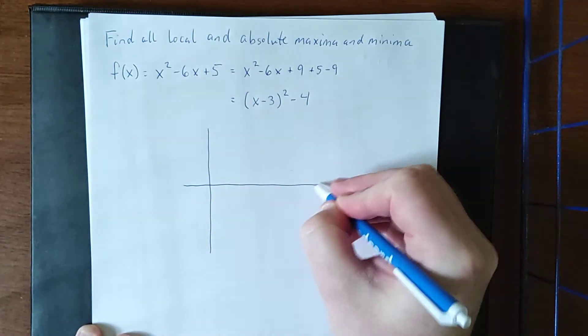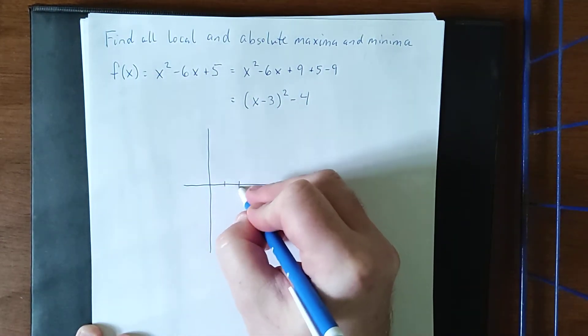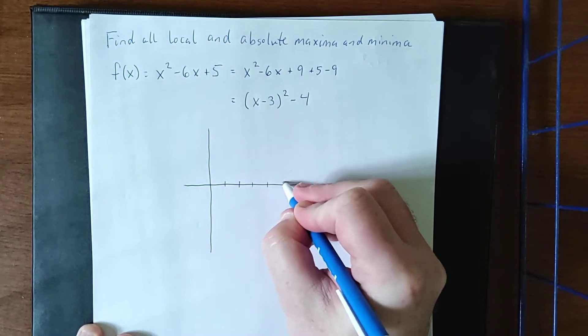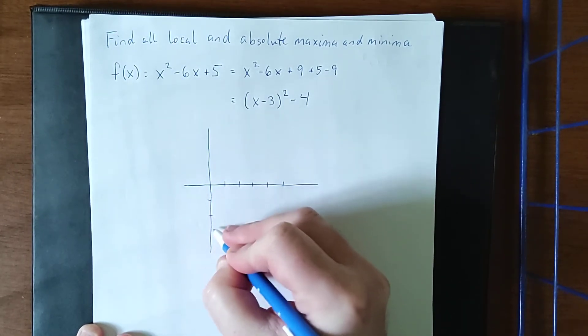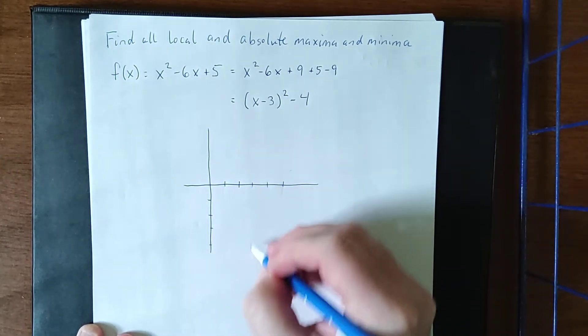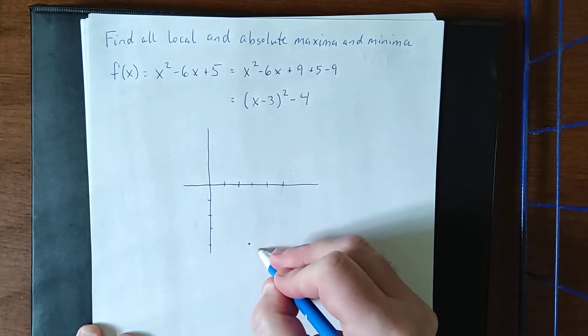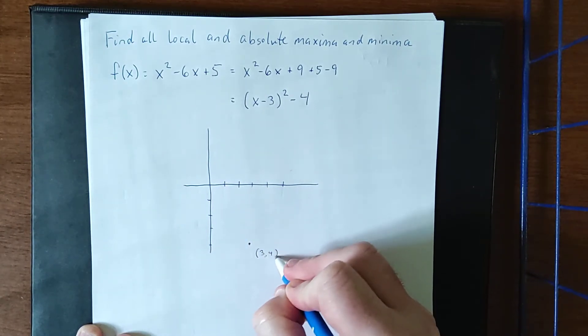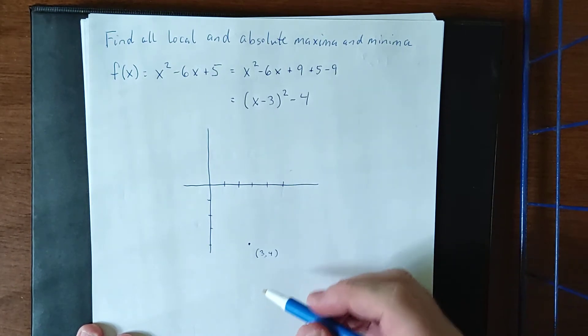What vertex form tells us is the location of the vertex. In this case, that vertex would be located at (3, -4), and the parabola is going to open in an upward direction.